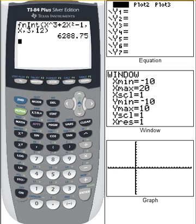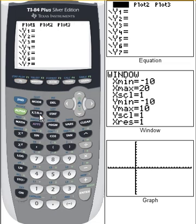This can also be done using the graph. Let's show you that. So let's say we put our function in at y1. So our function was x cubed plus 2x squared minus 1.